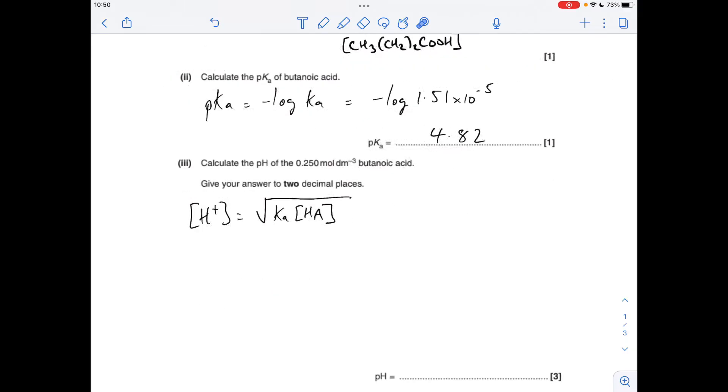Moving on to the next part, we've got to calculate the pH of the 0.25 moles per decimeter cubed butanoic acid. So I've already written up there, the H plus concentration of a weak acid is calculated by this formula, the square root of Ka times the original concentration of the acid. I call this the square root of Kaha to help me remember it.